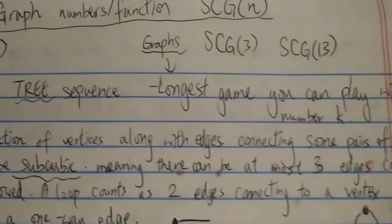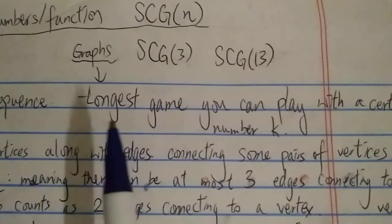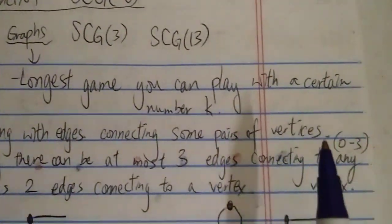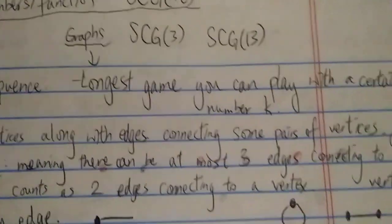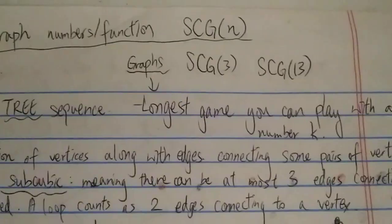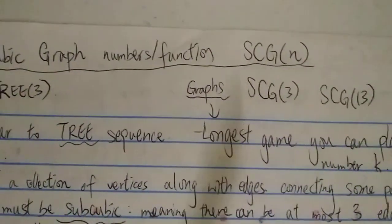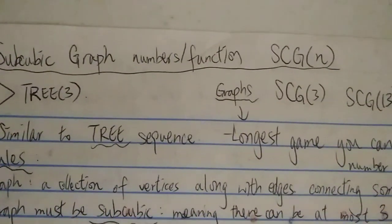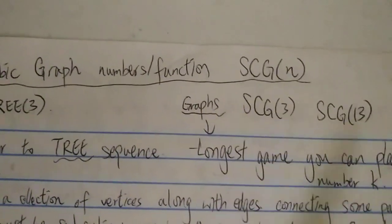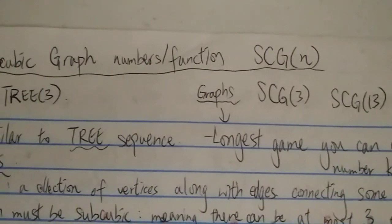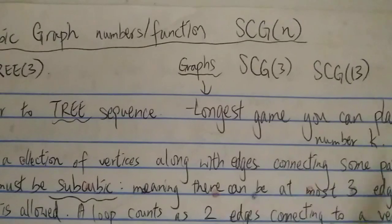SCG(n) or SCG(k) is basically the longest game you can play with a certain number k. It is slightly more confusing than the TREE sequence. The SCG function is proven to grow much faster than the TREE sequence, so SCG(3) has been proven to be much bigger than TREE(3), and SCG(13) is one of the most studied numbers regarding this function.